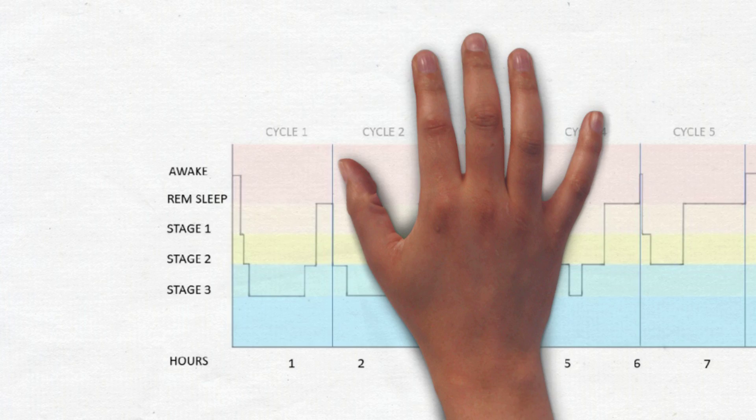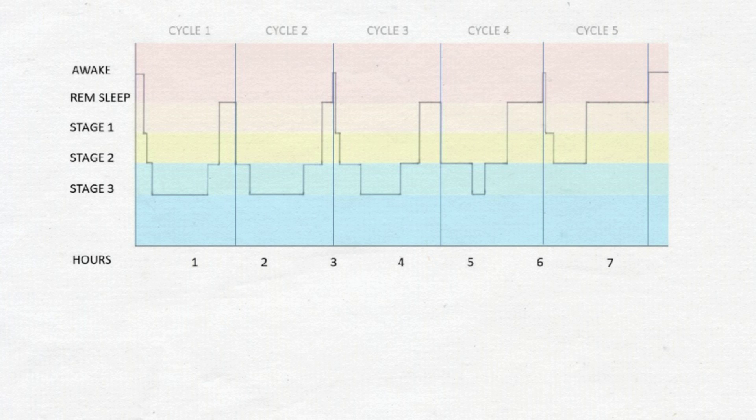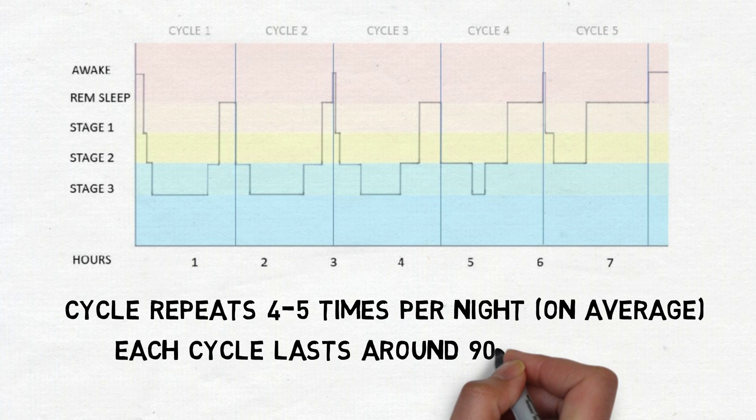After REM sleep, the person will sometimes awaken briefly, but then will move through the sleep stages again, in order. Most people will repeat this cycle 4-5 times a night, with each cycle lasting about 90-110 minutes.